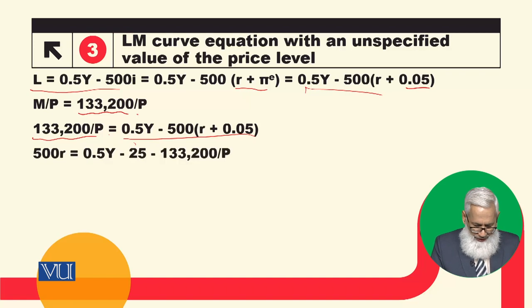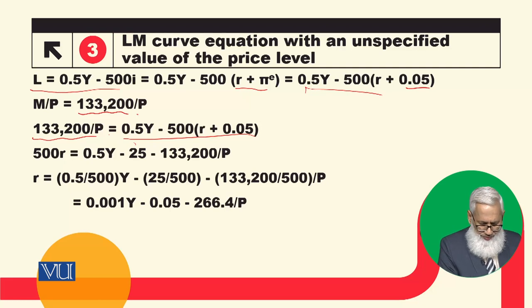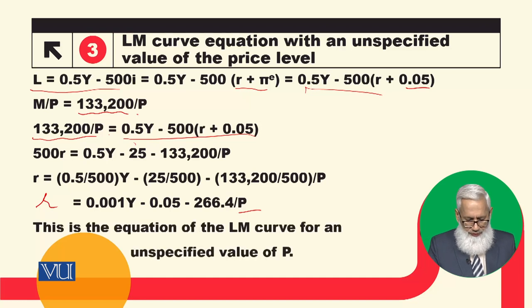So this is the equation we are solving. We have M/P equals 133,200/P. This is the equation of the LM curve for an unspecified value of P.